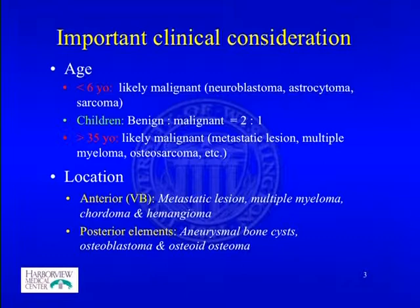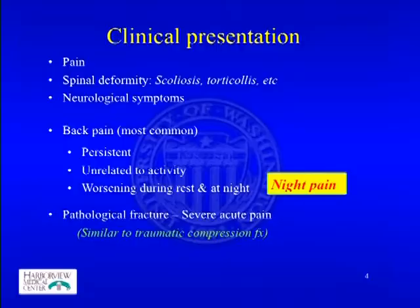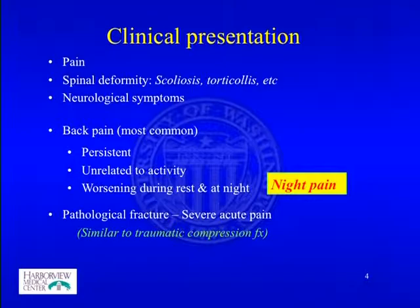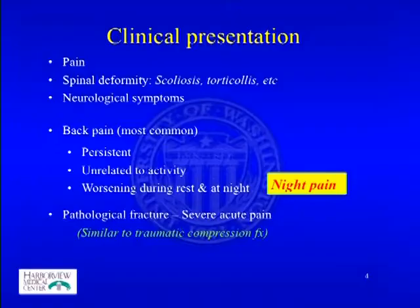The posterior elements are more likely to harbor benign lesions such as aneurysmal bone cyst, osteoblastoma, or osteoid osteomas. The clinical presentation of primary bone tumor is no different from metastatic lesion — it can be pain, spinal deformities, scoliosis, and neural element compression symptoms. Back pain is the hallmark of spine tumor, especially night pain.